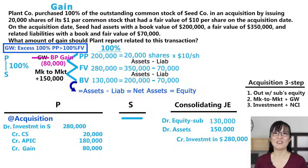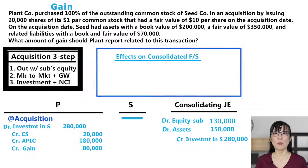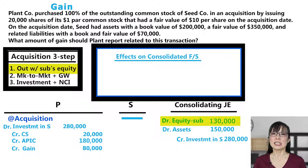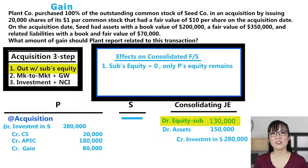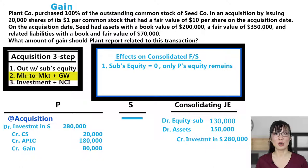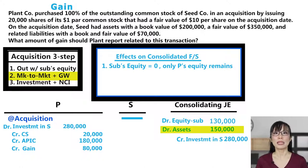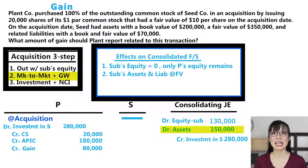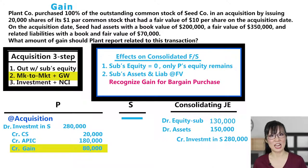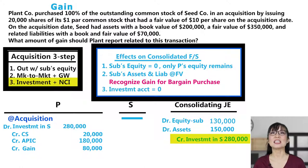Let's take a look at what we're left with after the consolidating journal entry. Step one: out with Sub's equity — Seed's equity is now zero. That means on the consolidated financial statements, only Plant's equity remains, and that's what you want. Step two: mark to market — we marked all of Seed's assets and liabilities to fair value, so on Plant's consolidated financials, all of Seed's assets and liabilities are now shown at fair value. And we didn't have any goodwill — we had the opposite, a bargain purchase gain. Lastly, we got rid of the investment account — it's now at zero to avoid double counting.